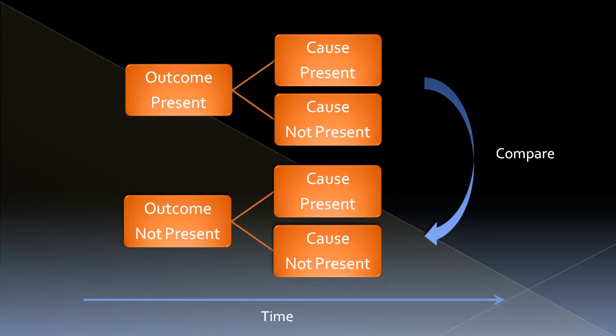What we do is take all the data for when the outcome is present and all the data for when the outcome is not present. All those people that have the outcome — all of their data — you put it to one side. All those people that do not have the outcome — all of their data — you put that to one side. For each of these two groups of data, you can look at the particular variables to see where the cause is present and where it is not, then make a comparison between these groups to see if there is a difference. When you see a difference, that might be the thing you're trying to find.